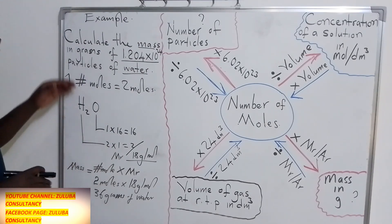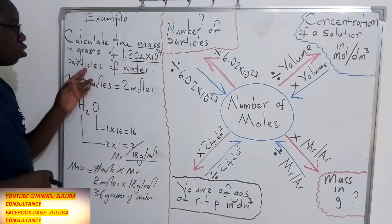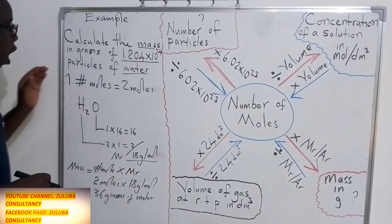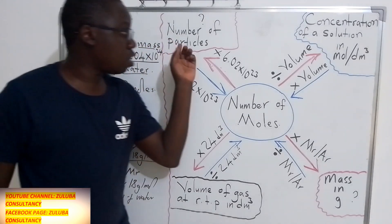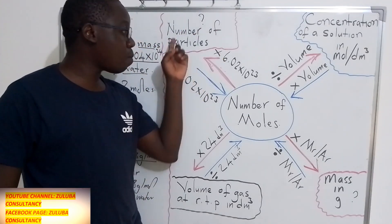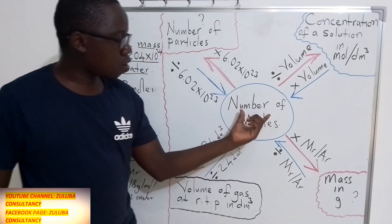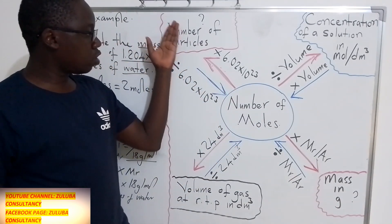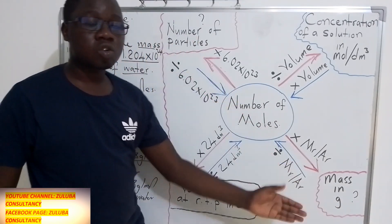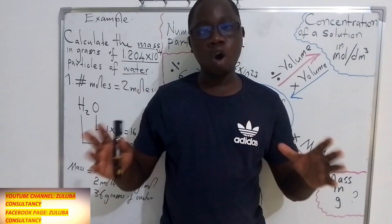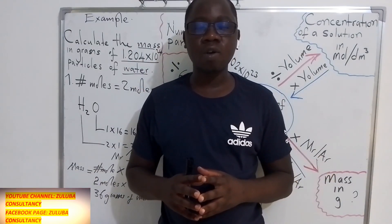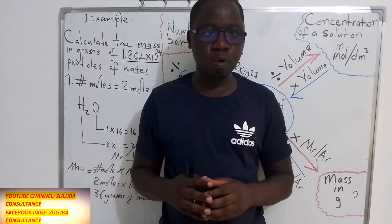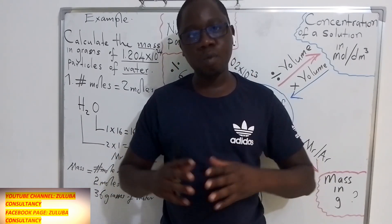We have managed to go from the number of particles to the mass. The first thing we did was convert the number of particles to the number of moles. Then, from the number of moles, we converted to the mass using the link we demonstrated. We hope this video was very helpful — please subscribe to our YouTube channel and Facebook page for more videos.